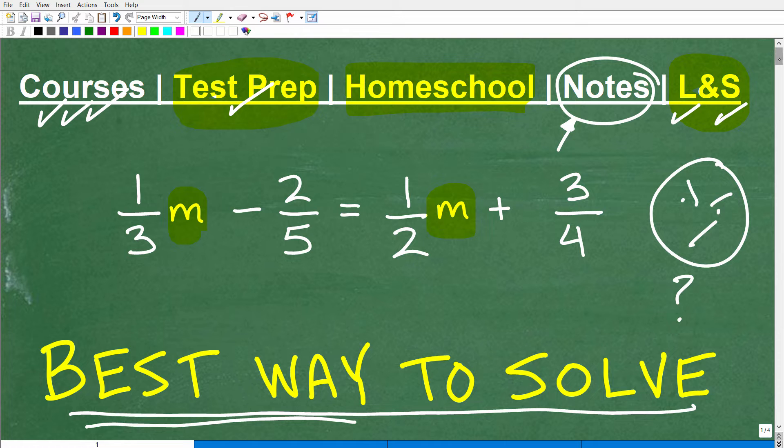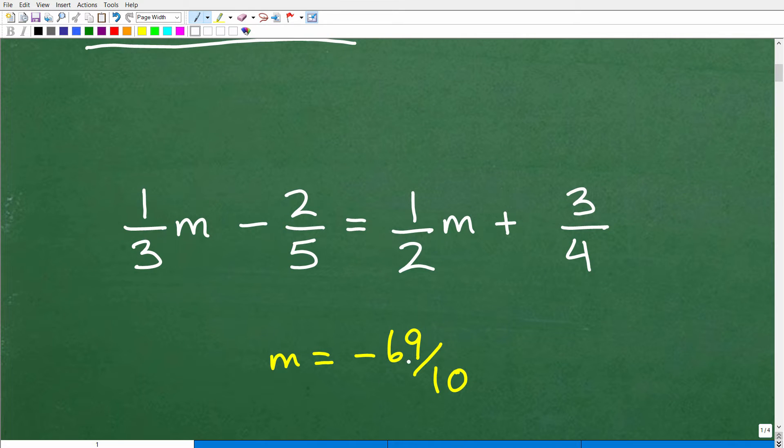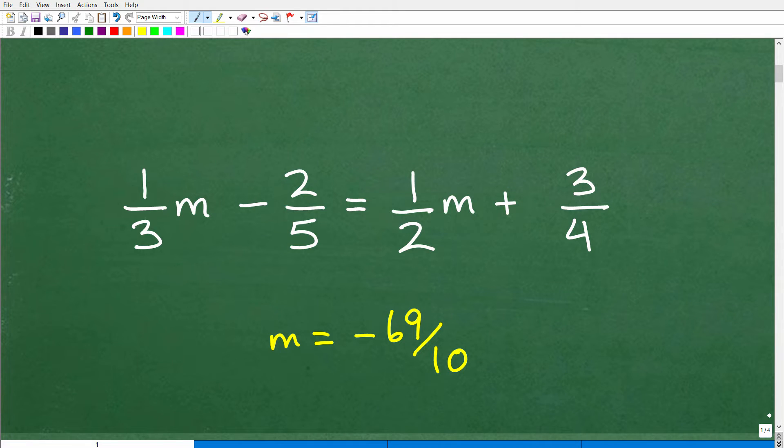And the first thing I'm going to do is show you the solution to the problem. So there you go. M is equal to negative 69 over 10. Now, the worst way to solve this problem is to just get your calculator out and convert all these things into decimals. Just assume you will not have your calculator on these exams. But this is the solution.